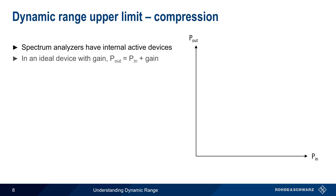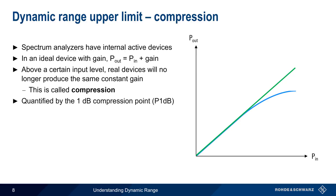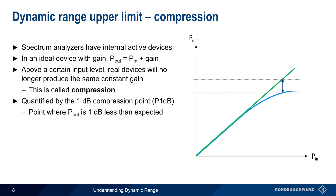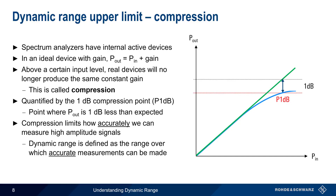In an ideal active device with gain, the device input power is linearly scaled by the gain, so P out equals P in plus gain. However, if the input signal amplitude becomes large enough, a real device will no longer be able to produce this constant gain, and output power will no longer follow this linear relationship. This situation is called compression, and is usually quantified by the 1 dB compression point — the point at which the expected power and the actual output power differ by 1 dB. Compression limits how accurately we can measure high-amplitude signals. Even though the amplitude of a compressed signal can still be measured, recall that the definition of dynamic range is the range over which signals can be accurately measured, and this is why compression affects the upper limit of dynamic range.